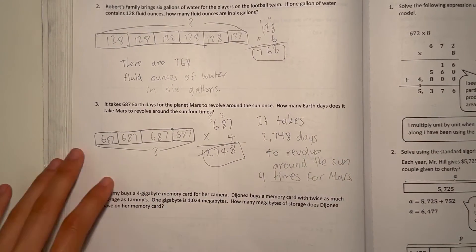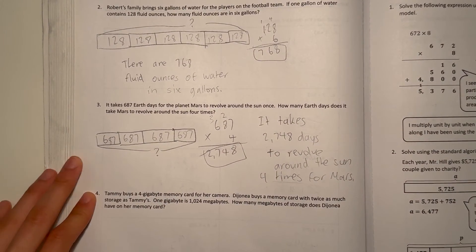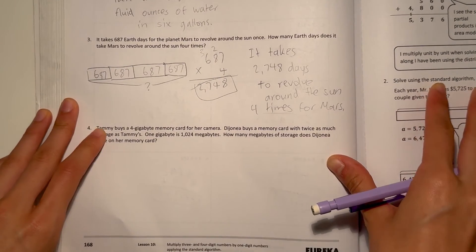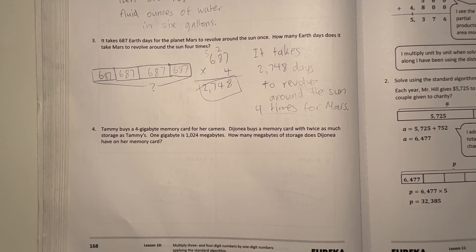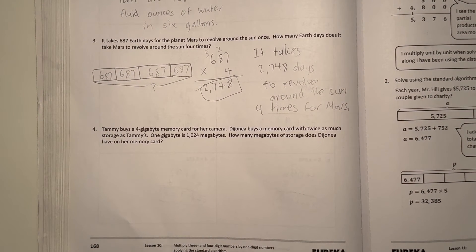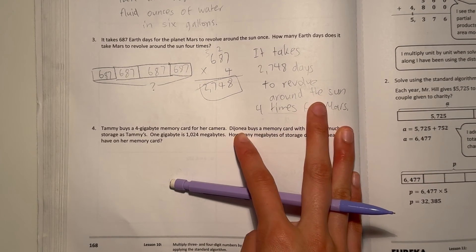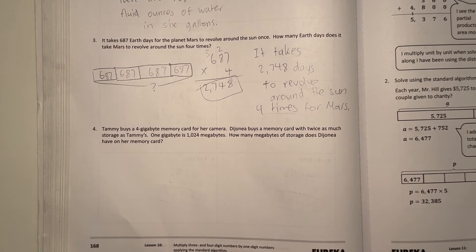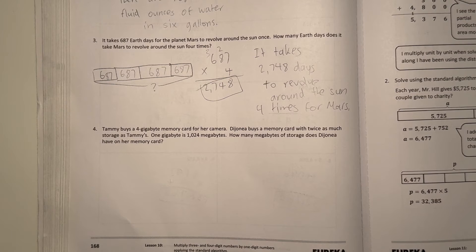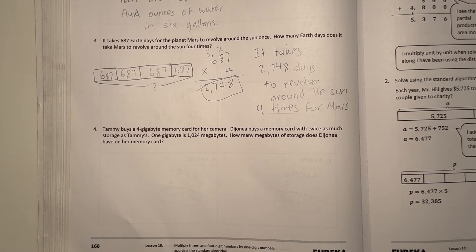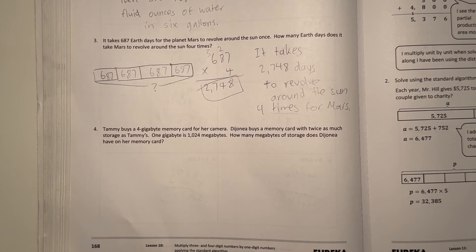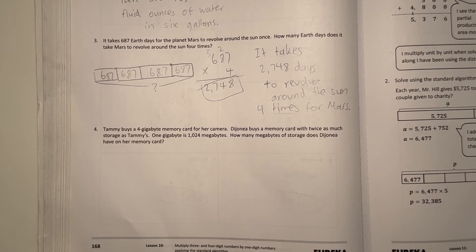Alright. Number 4. Tammy buys a 4GB memory card for her camera. Dijonia, I want to say this hard to pronounce it, but I'm not sure. But it's a memory card with twice as much storage as Tammy's. 1GB is 1024MB. How many MB of storage does Dijonia have on her memory card?